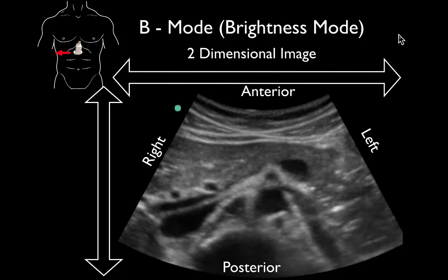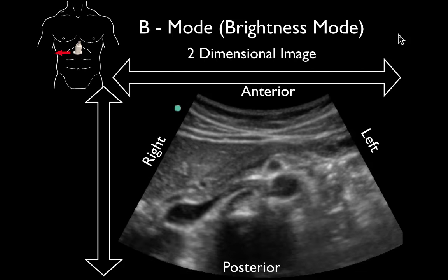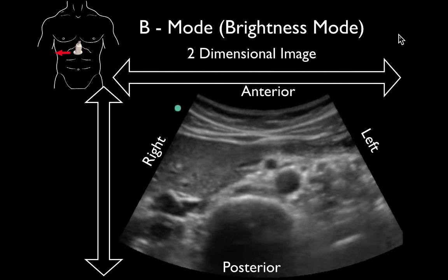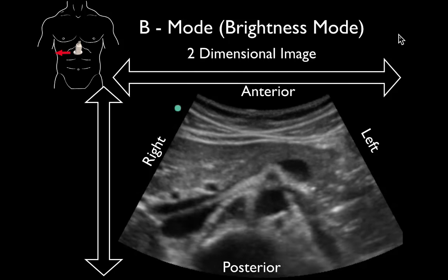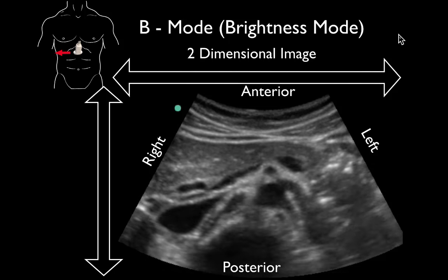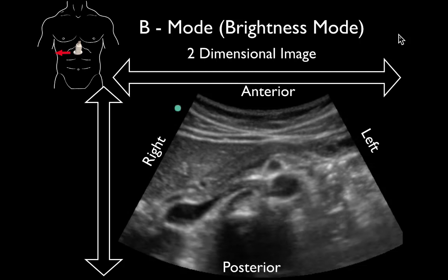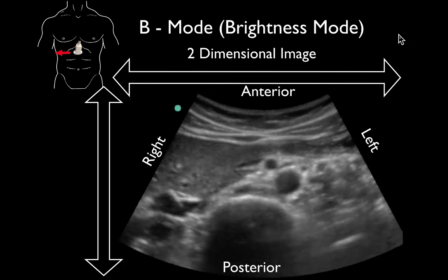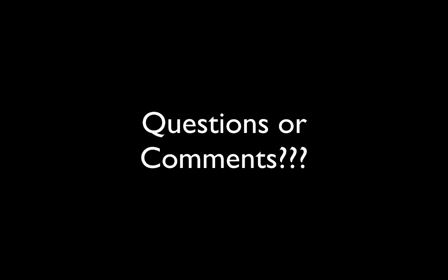That's B-mode or 2D mode ultrasound, and this is what you'll typically scan. Just make sure you get yourself oriented as you identify your structures — that will help you the most to see live anatomy. Let us know if you have any questions or comments, and thanks for listening.